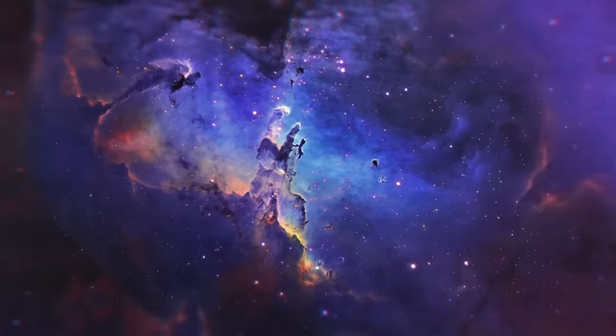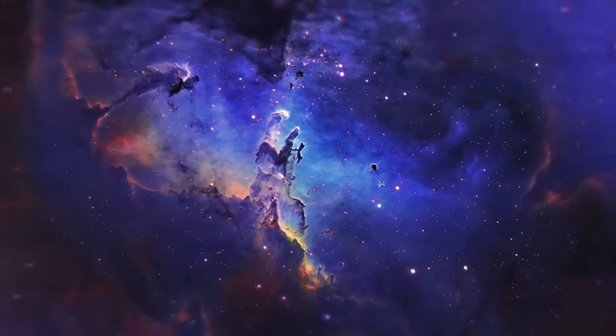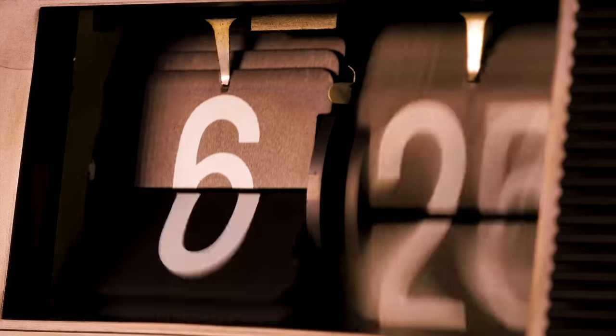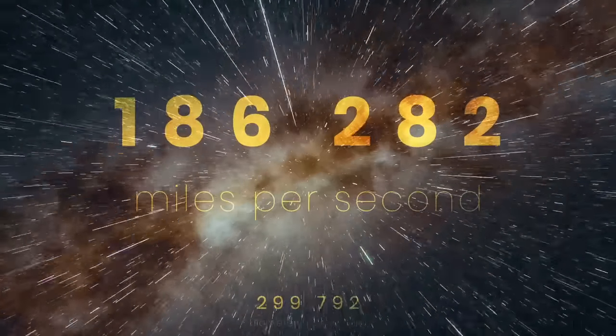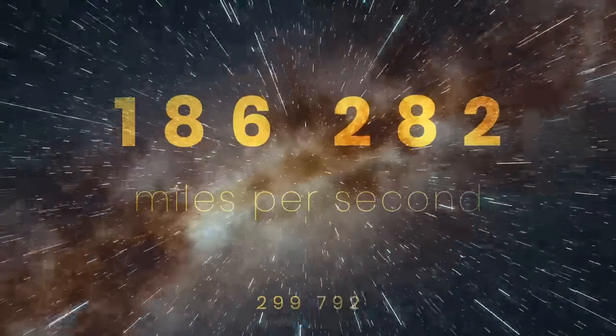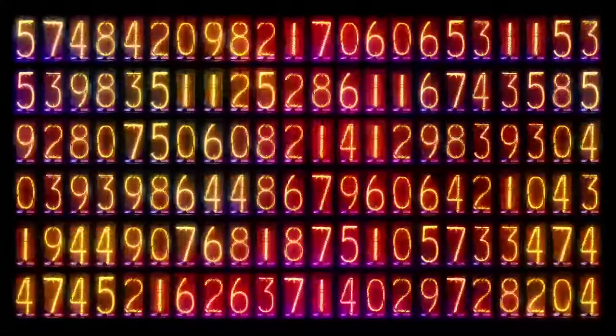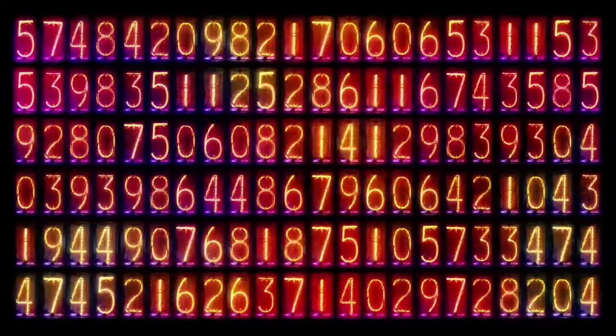The problem is, moving through space and time doesn't seem to be governed by the same rules. There's a limit on how fast you can go in three dimensions of space, and that's 186,282 miles per second. But is there such a boundary for how fast or slow time can progress?